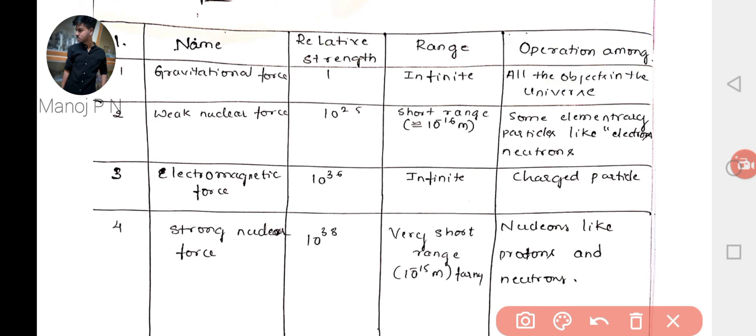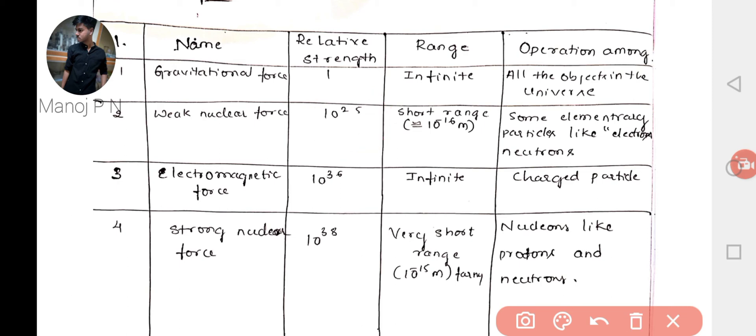Second, the weak nuclear force is 10 to the power of 25 times stronger than the gravitational force. Its range is approximately 10 to the power of minus 16 meters. It operates among some elementary particles like electrons and neutrons, which undergo the beta decay reaction.